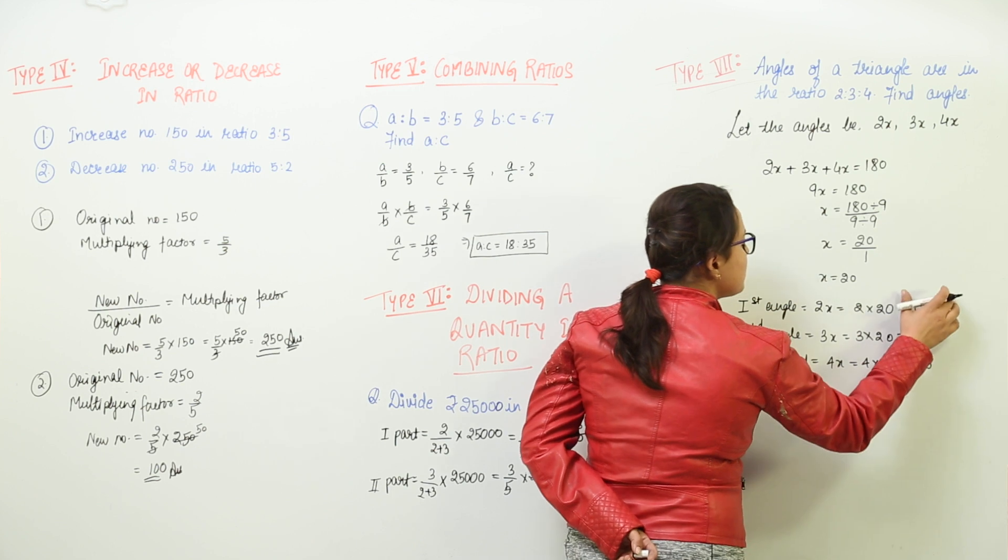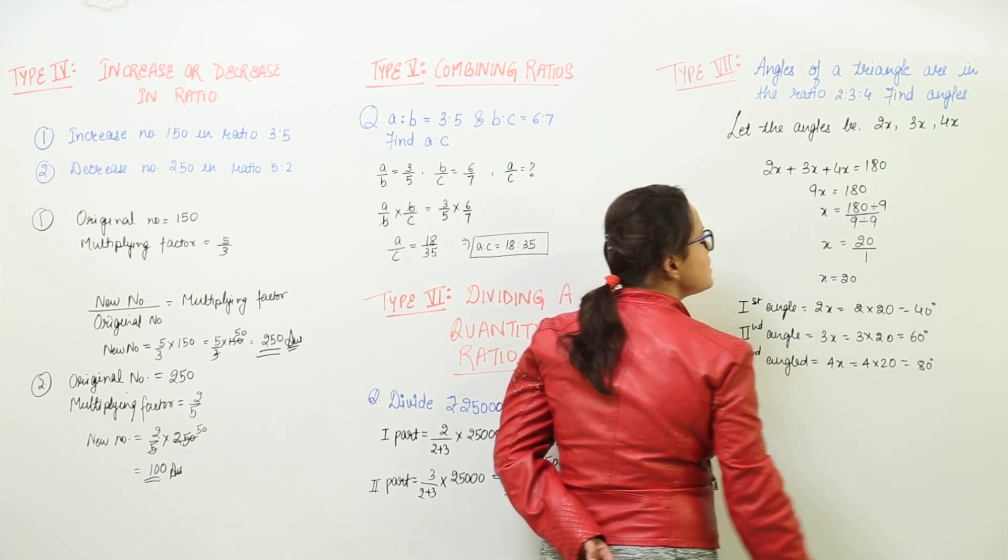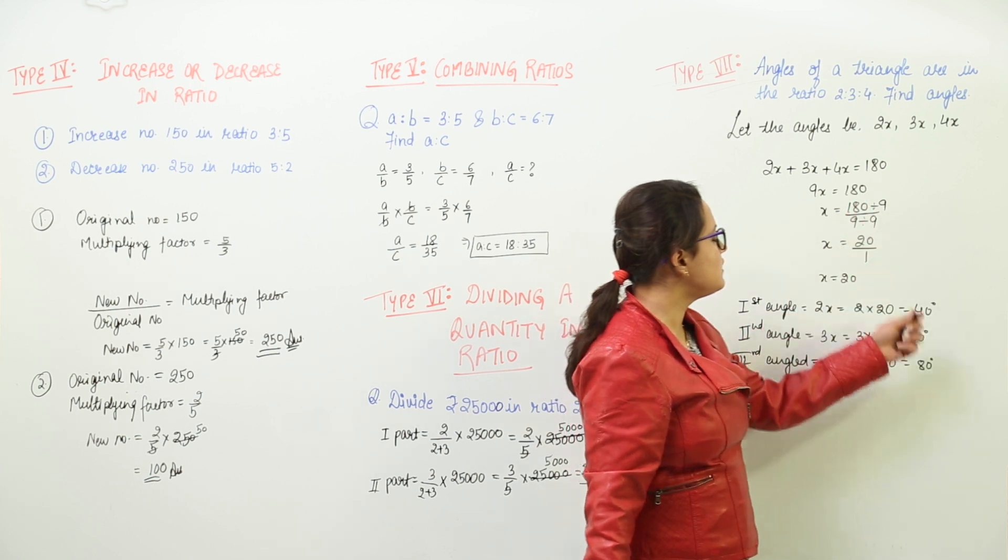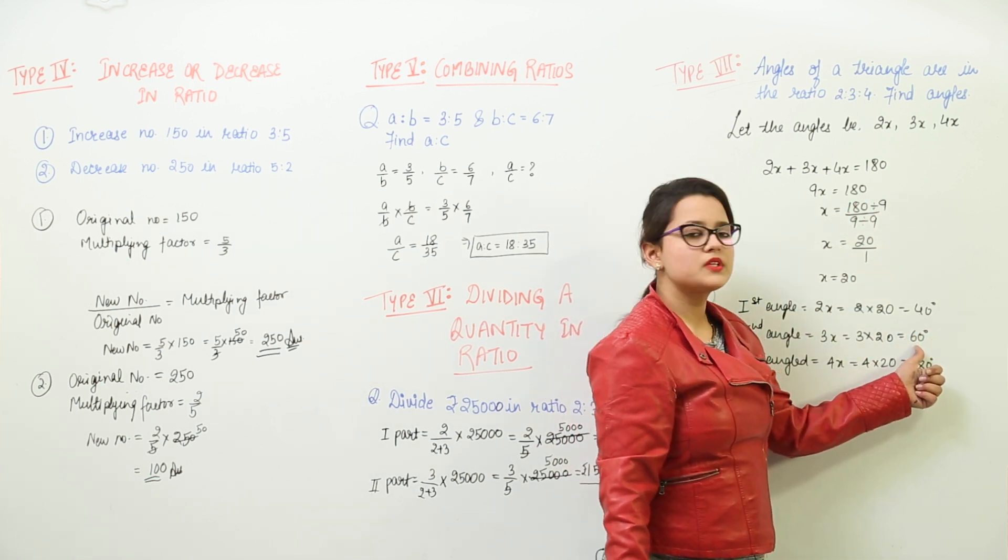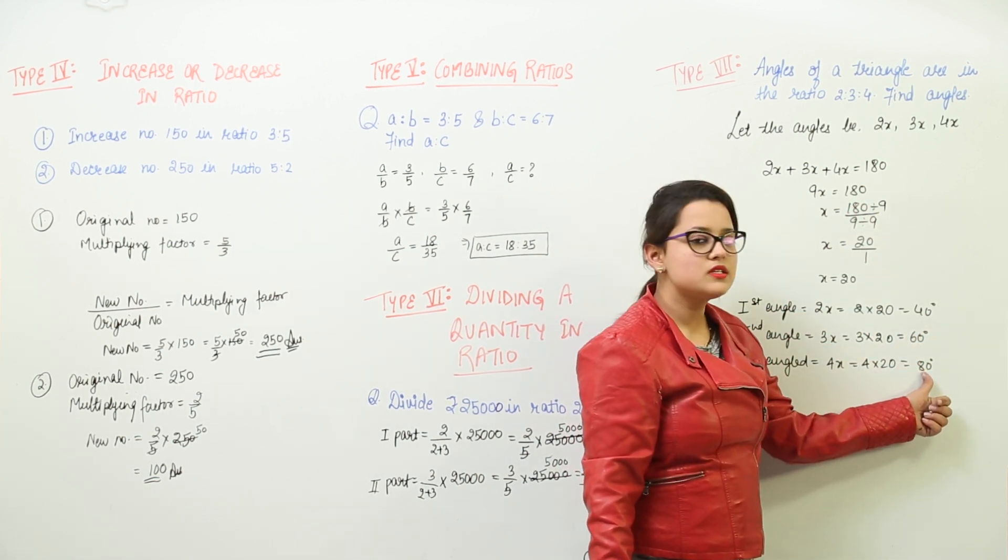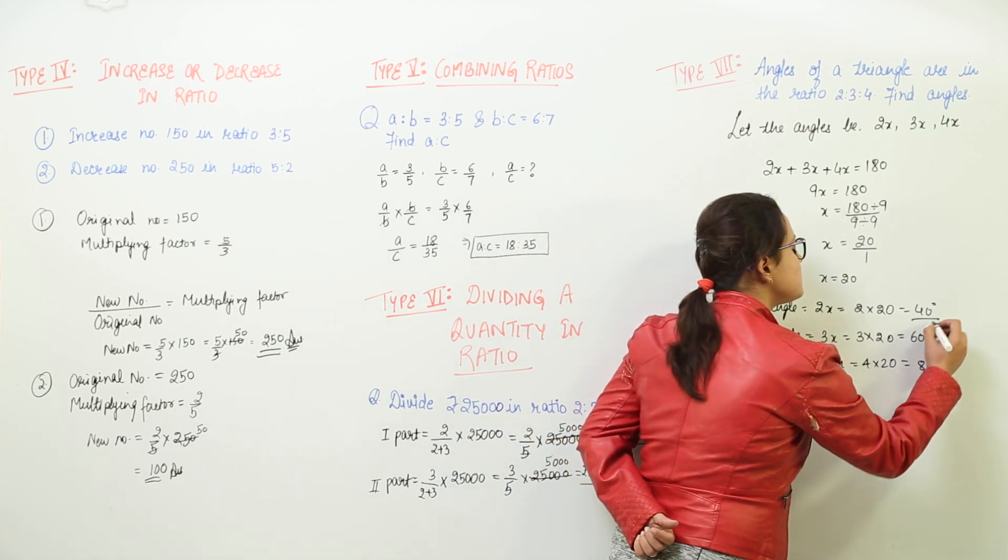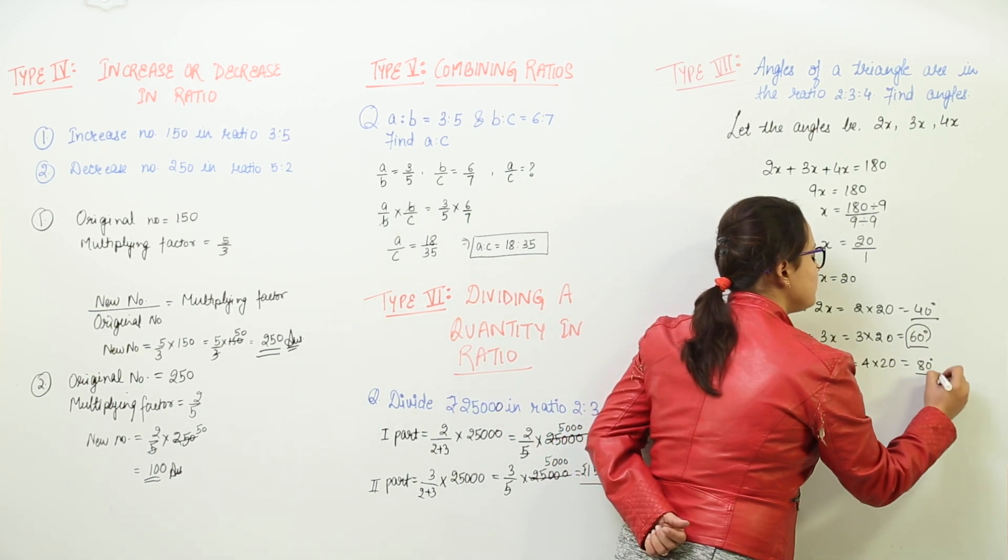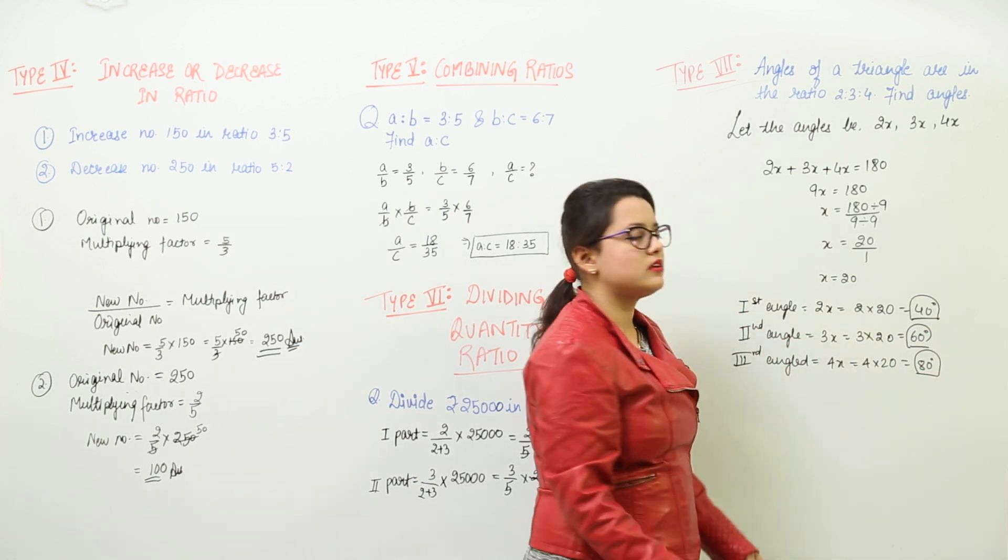Now you can check by adding your answers, all the 3 angles, and you must get 180 degrees. 60 plus 40 is 100, 100 plus 80 is 180. So the 3 angles that you had to find are 60, 80 and 40 degrees.